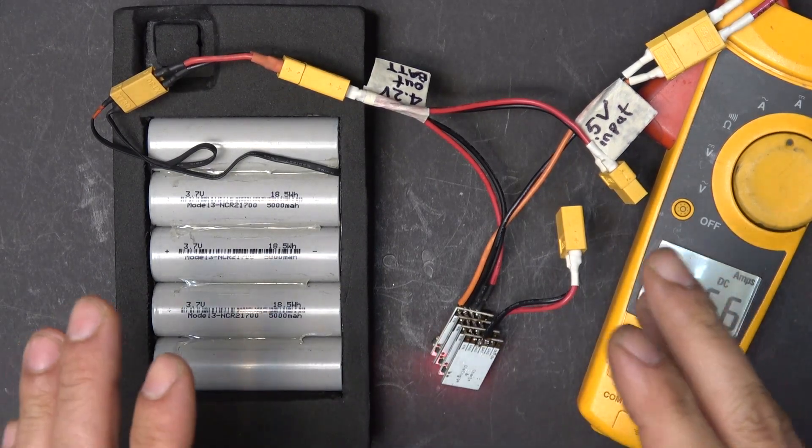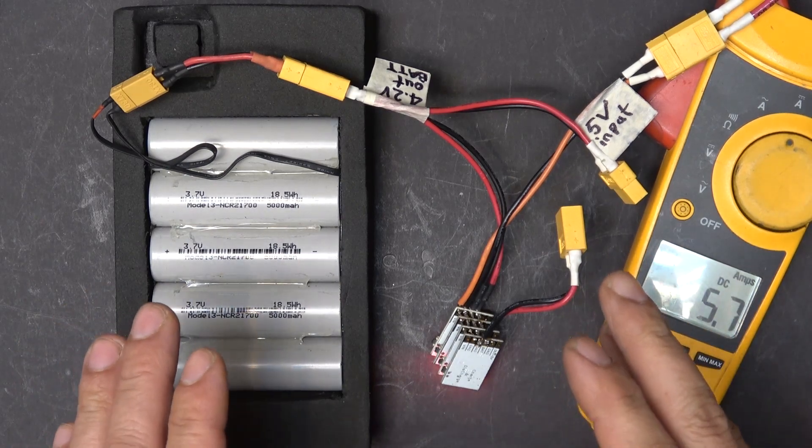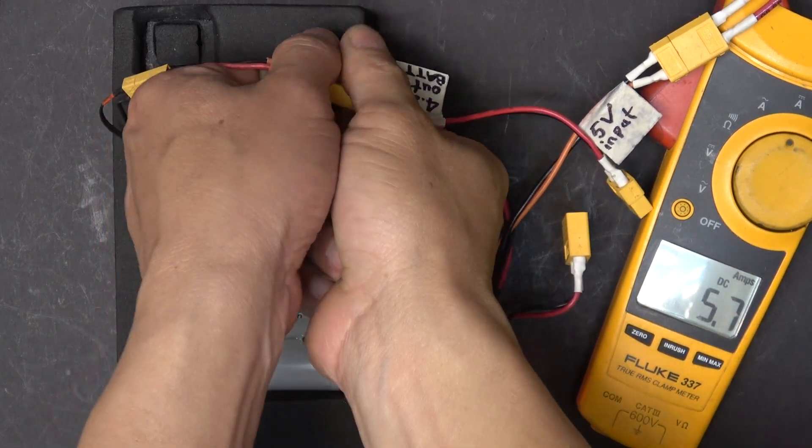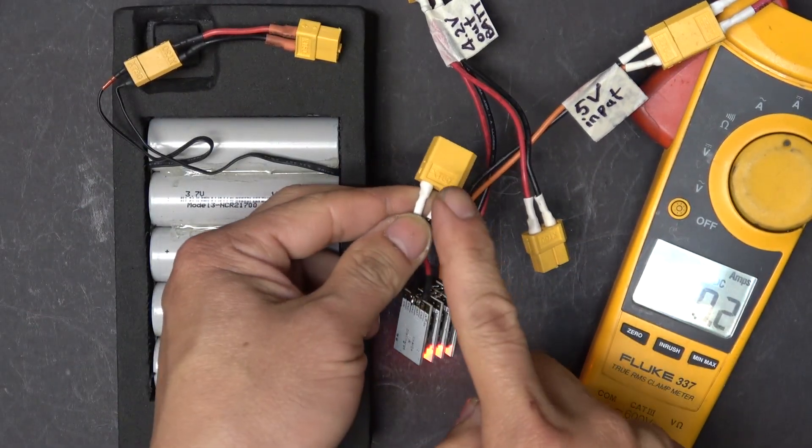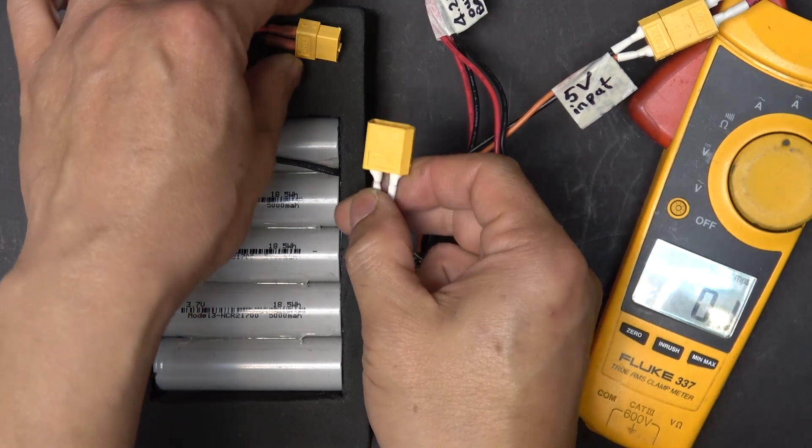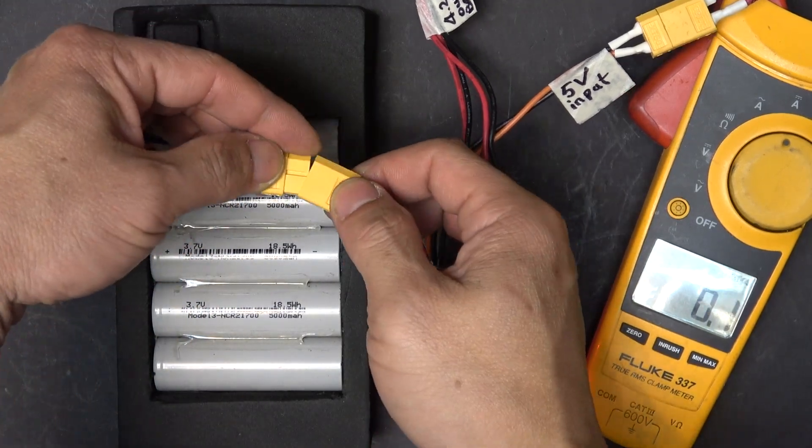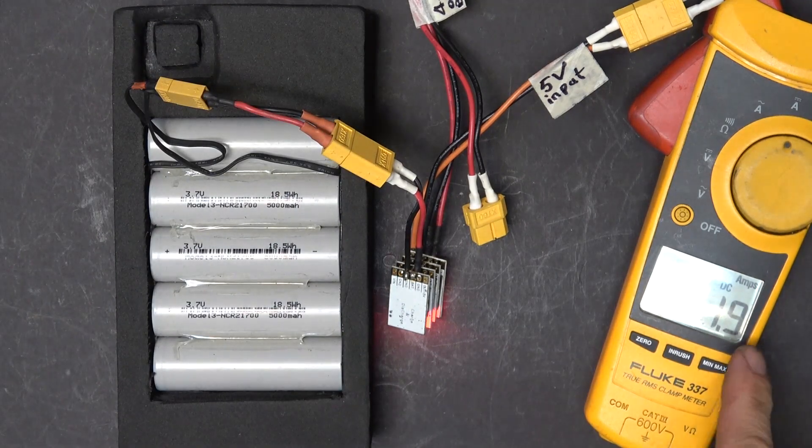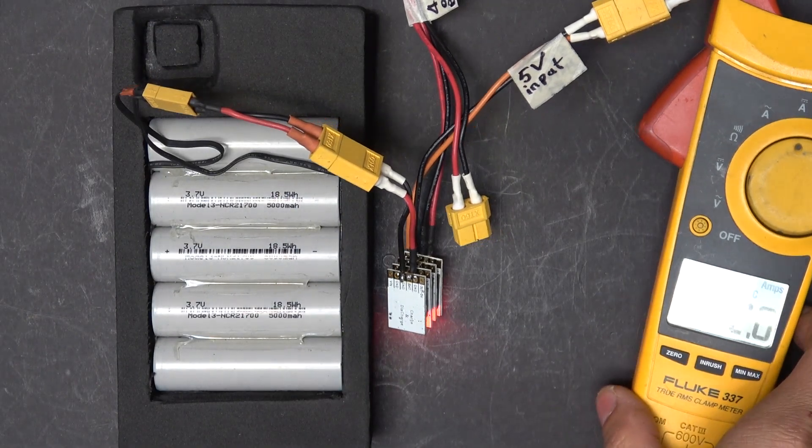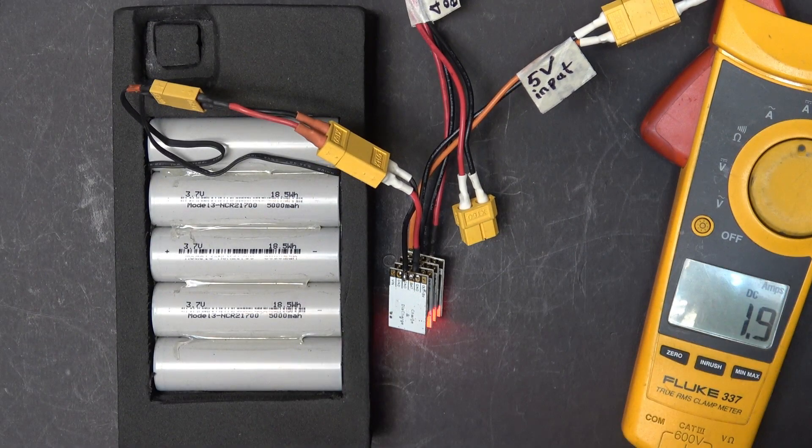Now if I have a smaller battery pack and I want to charge at 2 amps, let me disconnect this. I'm just going to use this alone. So let's plug this in, see what happens. There we go, 2 amps. That is perfect.